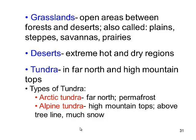Grasslands are big open areas between forests and deserts — also called plains, steppes, savannas, or prairies. Do we have any of those here in Maine? Yeah, big huge fields — we could consider them grasslands, between forests. Until somebody plants potatoes.